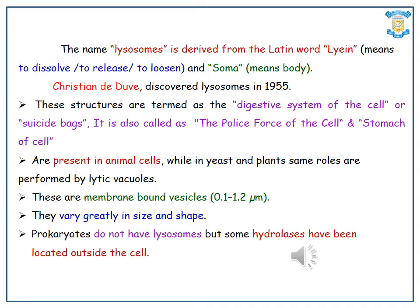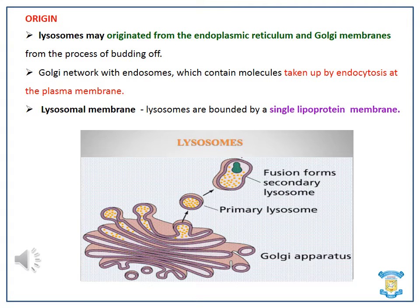Lysosomes are present in animal cells, while in yeast and plants the same role is performed by lytic vacuoles. These are membrane-bound vesicles. They vary greatly in size and shape. Prokaryotes do not have lysosomes, but some hydrolases have been located outside the lysosomes. They are made, originated from the endoplasmic reticulum and Golgi membranes from the trans-Golgi network with endosomes.